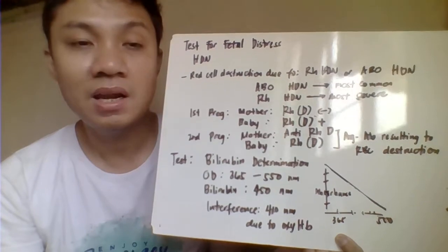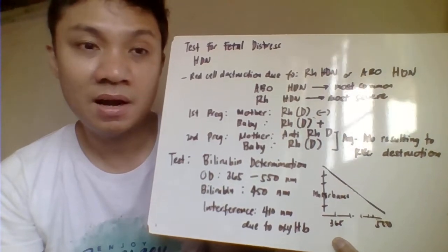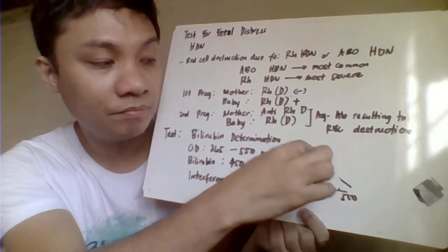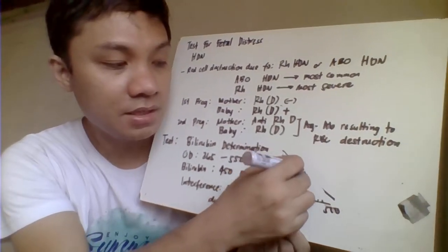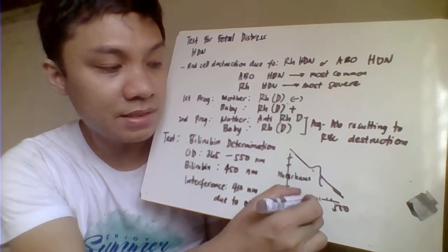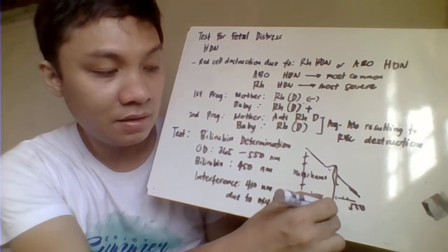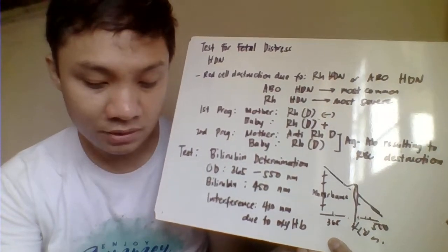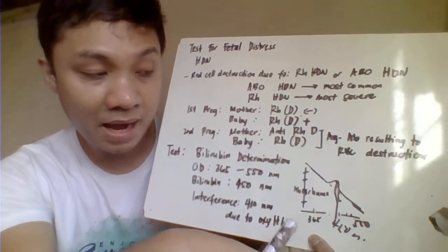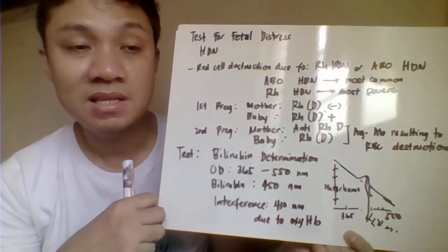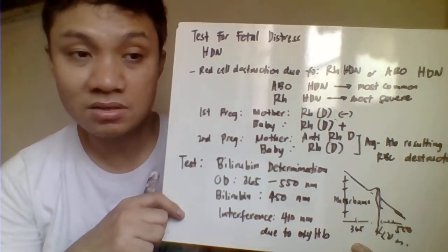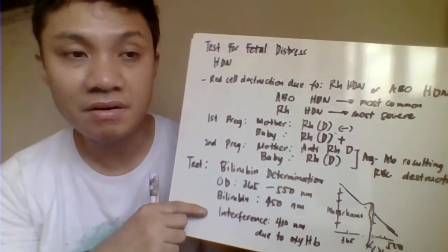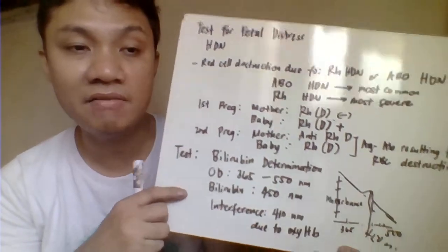For example, if there is a lot of bilirubin due to increased red cell destruction as in Rh HDN, instead of the absorbance going down, it will go up at 450 nm — the maximum absorbance of bilirubin. So the absorbance increases at 450 nm because the baby has increased red cell destruction resulting in increased bilirubin concentration.